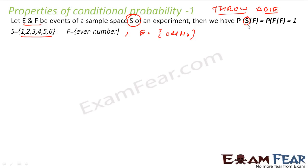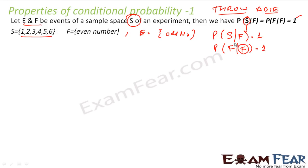The probability of getting the whole sample space given any condition is nothing but 1. Also, the probability of getting any event given that same event is also 1, because from that event you are asking the probability of that event only — that always has to be 1. For example, probability of getting an even number given the number is even is always 1; probability of getting a head given that it is a head is always 1.